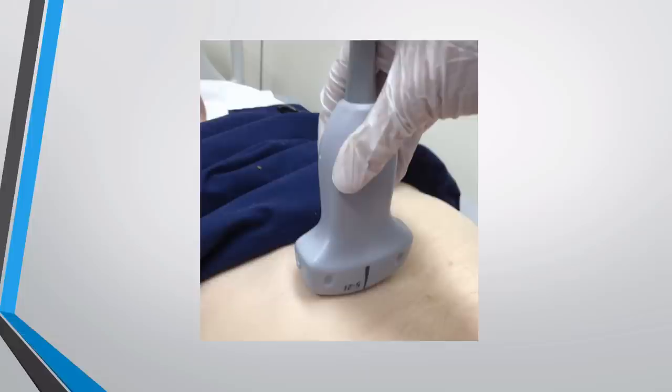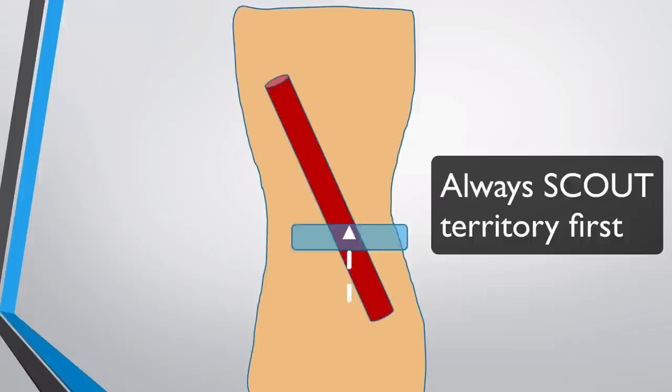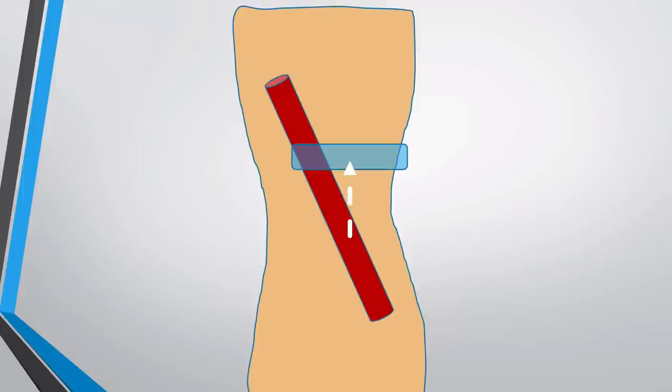Have you ever had that experience where as you gradually edge your needle down towards the vessel, the vessel seems to be quietly sidestepping away from your needle? This usually means that you haven't scouted the territory properly before you've put needle to skin. A common area for this is the antecubital fossa where the median cubital vein may run quite oblique to the long axis of the limb. This is one of the reasons I like to turn 90 degrees and image the vessel in long wherever I can, because that gives me the exact orientation of the vessel before I put the needle in.